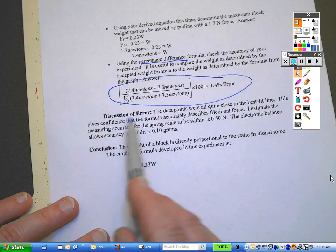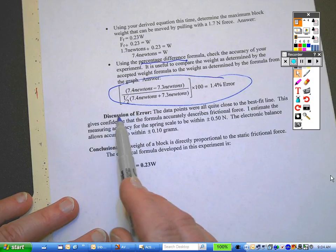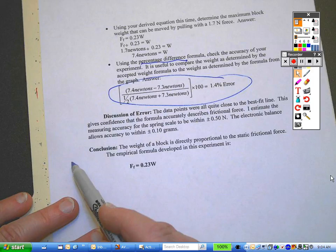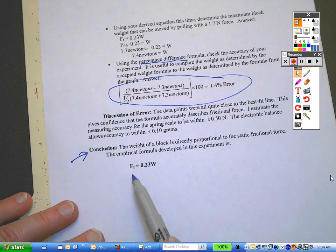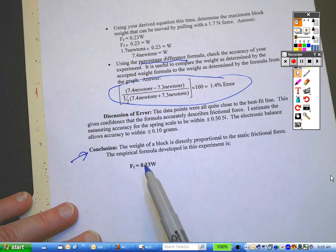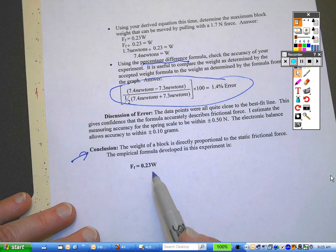It's good to have a section that's discussion of error to tell where you think the errors came from. And a very important part for a full lab report is the conclusion. If the introduction is what you hope to learn, the conclusion is what you really did learn.